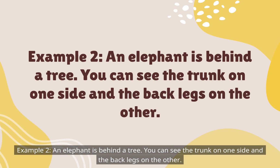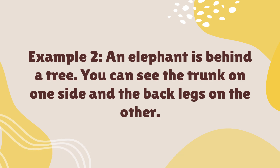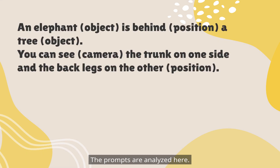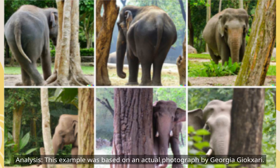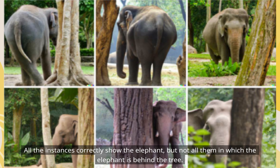Photography prompt Example 2: An elephant is behind a tree. You can see the trunk on one side and the back legs on the other. This example was based on an actual photograph by Georgia Gioxery. All the instances correctly show the elephant, but not all of them show the elephant behind the tree.